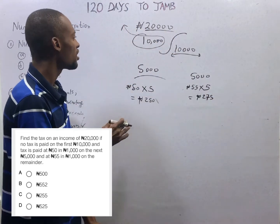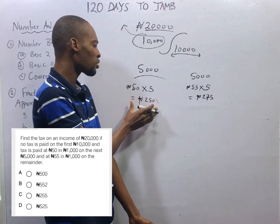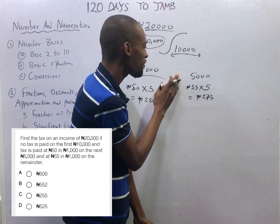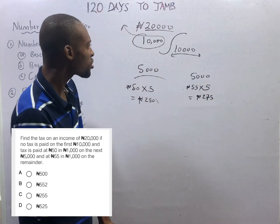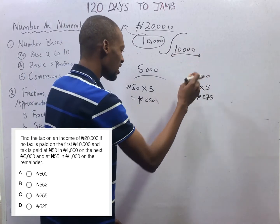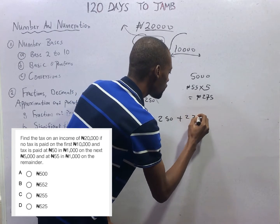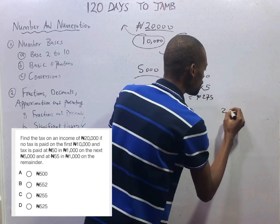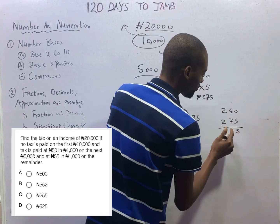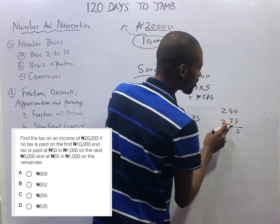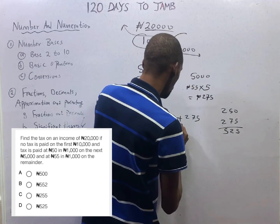Which means, the 10,000 Naira that tax is being paid on: the first 5,000 Naira had a tax of 250 Naira, and the second 5,000 Naira had 275 Naira. So the total tax on this remaining 10,000 Naira is 250 plus 275, which is 525 Naira.